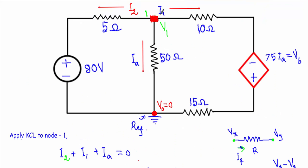Now let me apply KCL to node 1. Since there is no current source in this circuit, all unknown currents I1, I2, and Ia are outgoing. KCL states that the sum of all outgoing currents equals zero. I2 is the current through the 5 ohm resistor; this terminal has a potential of 80V and this terminal has a potential of V1, so I2 equals (V1 minus 80) divided by 5.